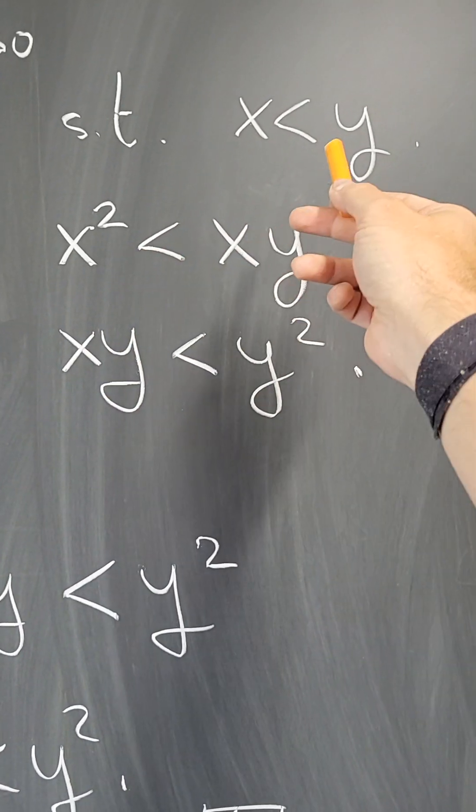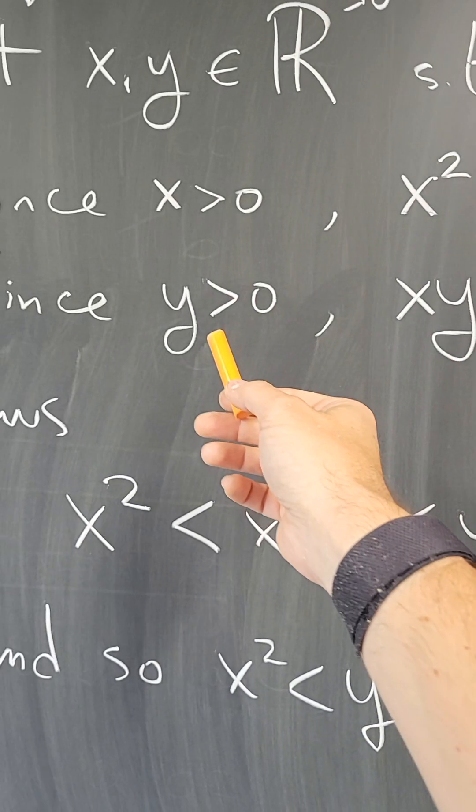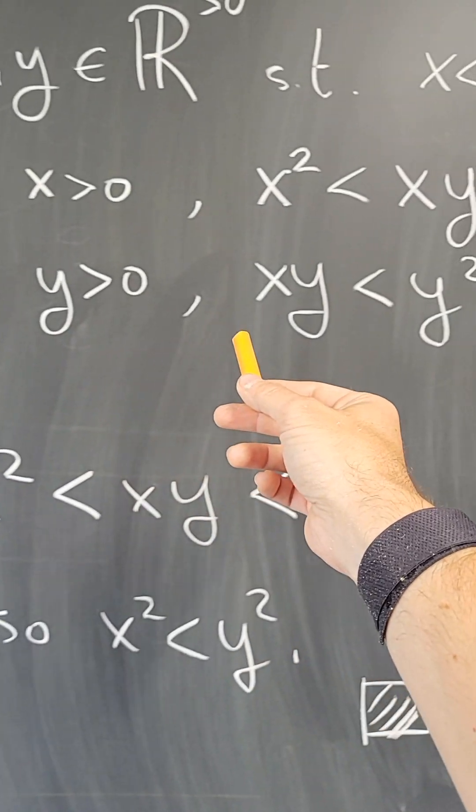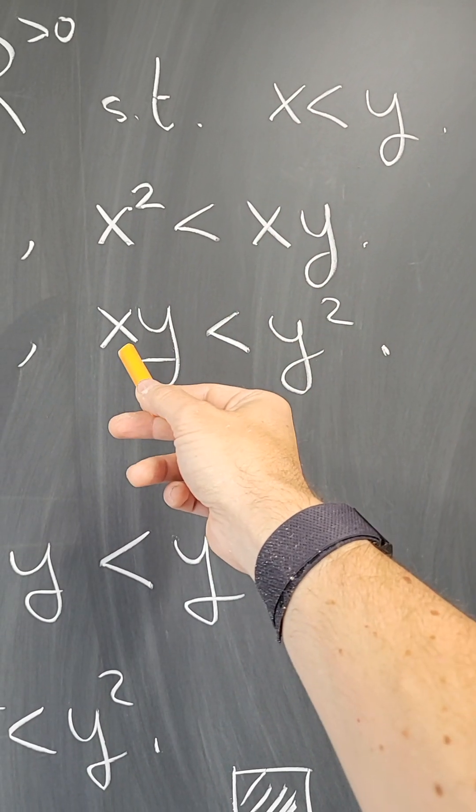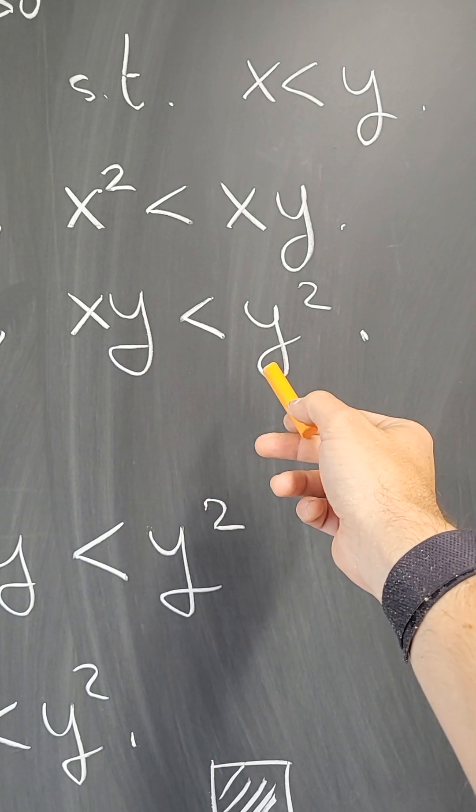x times x is x², x times y is xy. Now y is also positive, so I can multiply both sides again, but this time by y, and I get that xy is less than y².